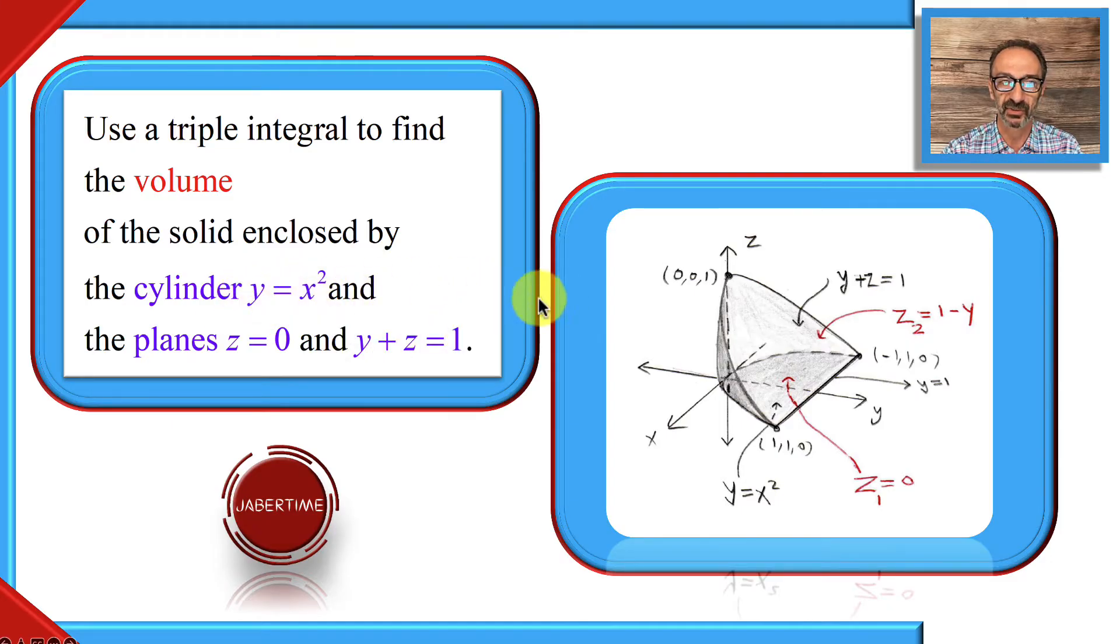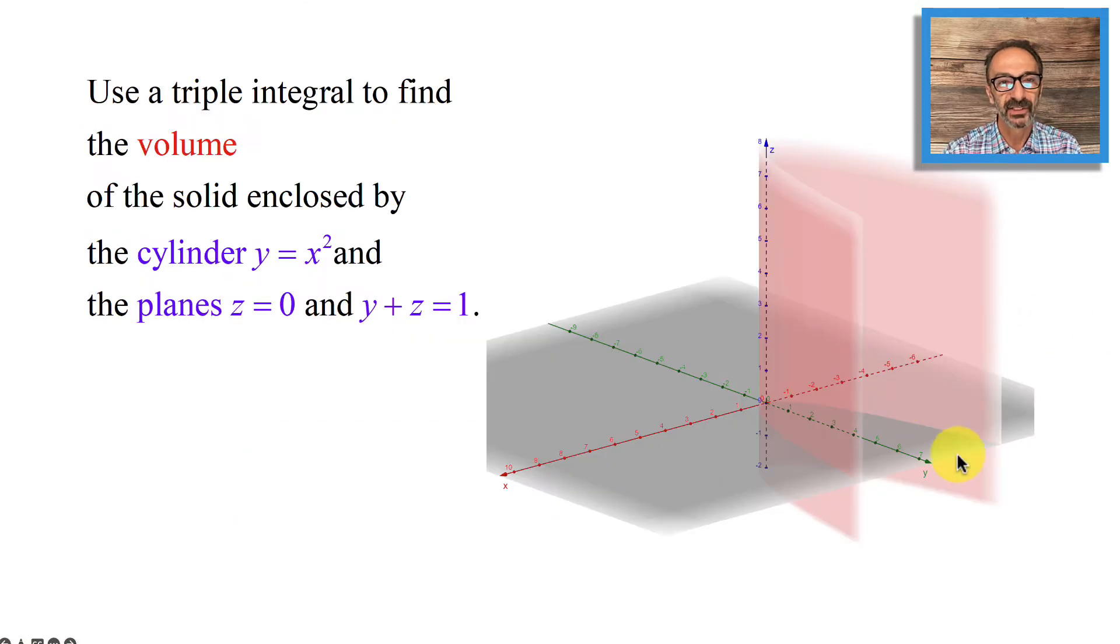This is y equals x squared in the xy-plane, which is a parabola holding the y and walking away from the x-axis. But since z is not mentioned, z could be anything—could be positive and could be negative, and that is what's called a cylinder.